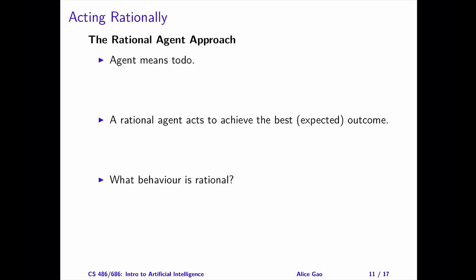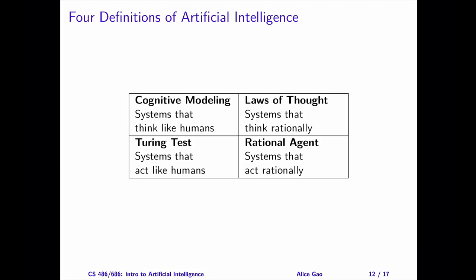To recap, the fourth definition of AI, rational agent, aims to develop a system that acts rationally. This definition uses rationality as the benchmark and seeks to model behavior rather than thoughts. Here's the table again with each definition labeled. After watching this video, you should be able to describe each of the four definitions of AI and compare and contrast these definitions.